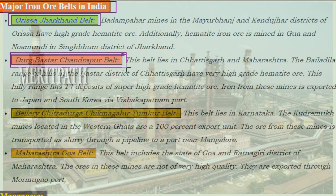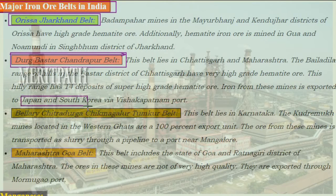The Durg-Bastar-Chandrapur belt lies in Chhattisgarh and Maharashtra. The Bailadila range of hills in the Bastar district of Chhattisgarh has very high-grade hematite ore, with 14 deposits of super high-grade hematite ore. Iron from these mines is exported to Japan and South Korea through Visakhapatnam port.